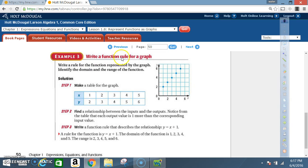Example 3. Write a function rule for a graph. Write a rule for the function represented by the graph. Identify the domain and the range of the function. Solution. Step 1. Make a table for the graph. In other words, take all the points on this graph and put them in a table in the form of x and y.